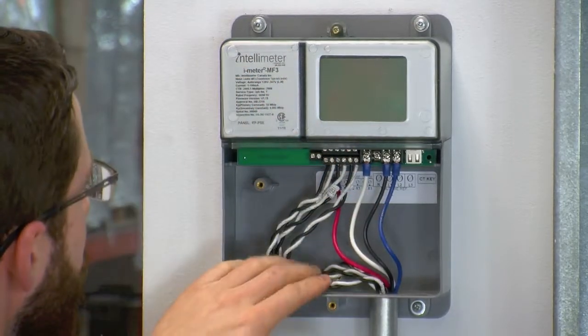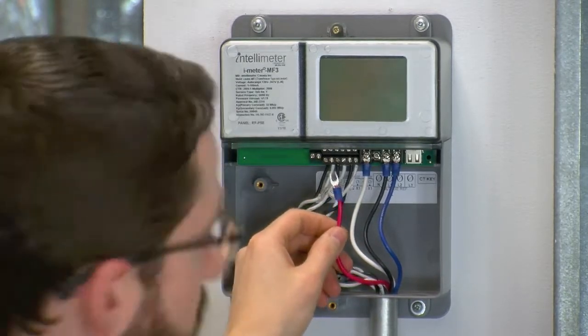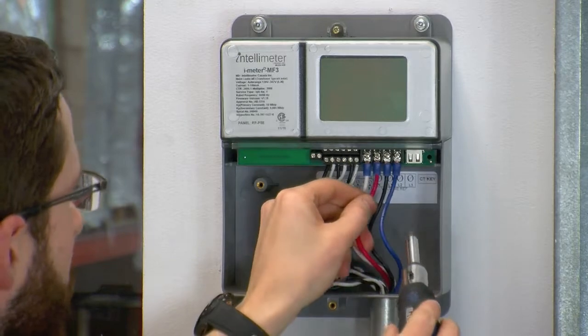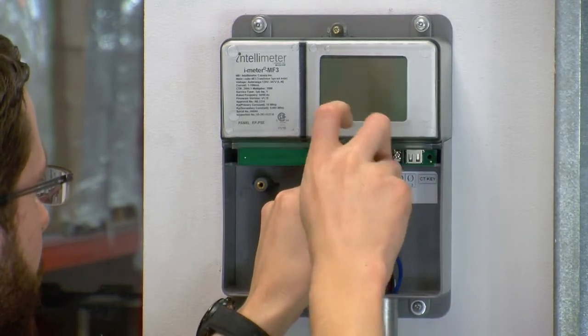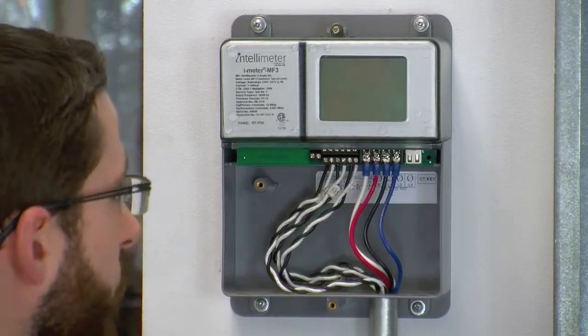Now for the reference voltage, we use fork connectors. Loosen off the terminal screws, but be careful not to loosen them too much as they can easily fall out. And terminate your neutral, line 1, line 2, and line 3 wires.